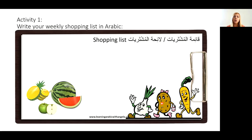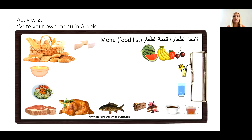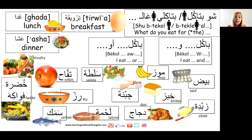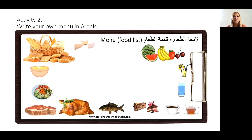An activity for you: write your weekly shopping list in Arabic — 'la'ihet el-mushtarayat' or 'qa'imet el-mushtarayat,' meaning the shopping list, literally 'the things that you buy list.' Activity number two: write your own menu in Arabic — 'la'ihet el-ta'am' or 'qa'imet el-ta'am.' That was everything for this lesson; we'll continue with more useful vocabulary in the next. Merci, och shukran.